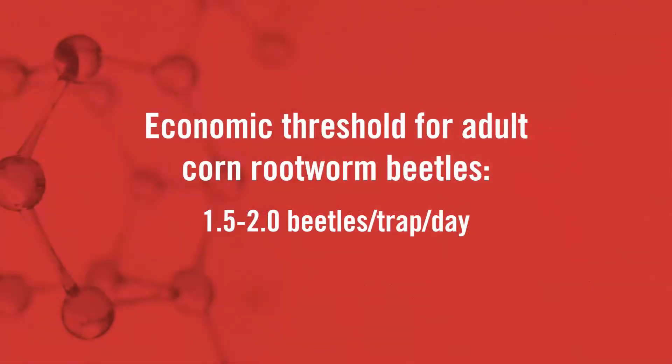Let's talk about economic thresholds. Economic thresholds are used to determine what population density is present and can ultimately cause some economic damage to the crop. When it comes to adult corn rootworms, traditionally those economic thresholds will vary with location and the corn hybrid or variety that you're using. But in general, anywhere from 1.5 to 2 beetles per trap per day is going to trigger a grower to go out and make a foliar insecticide application.